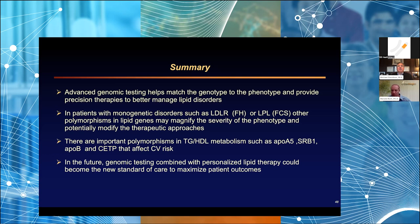Dr. Greenfield asked about patients with very high LDLs but zero calcium scores — possibly possessing resilience genes. Dr. Davidson noted there are four known longevity genes: Klotho (mechanism unclear), IL-6 loss-of-function (anti-inflammatory), ACE (lower blood pressure), and FOXO3 (affects lipid/glucose metabolism). He expressed hope that more resilience genes will be identified to explain why some patients with severe lipid disorders don't develop atherosclerotic disease. Dr. Dahl asked about using diabetes genomics — Dr. Davidson confirmed he is incorporating this, particularly for identifying high-risk diabetes genes to inform preventive therapy.